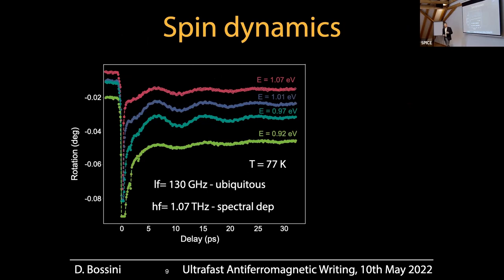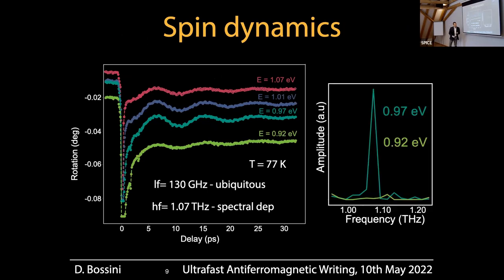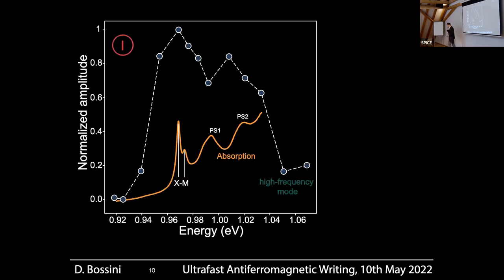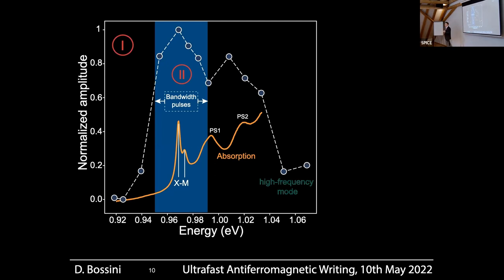We get a much better insight by looking at the data in the frequency domain. Fourier transforming these two traces, in the case of the very smooth data set there is no high-frequency contribution, but if you look at the spectrum where you have the faster ripple, a 1.07 THz contribution can be detected — exactly the frequency of the high-frequency magnon. We then measured for many more pump photon energies and plotted the amplitude of the two magnon modes as a function of excitation photon energy.